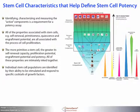Identifying, characterizing, and measuring the active components is a requirement for a potency assay. All of the properties associated with stem cells — for example, self-renewal, primitiveness, quiescence, and engraftment potential — are all associated with the process of cell proliferation.